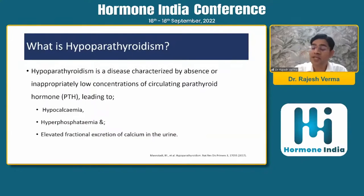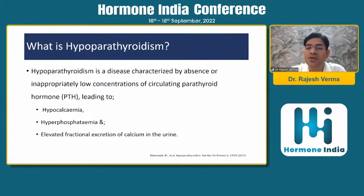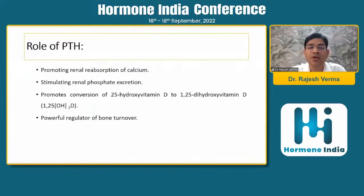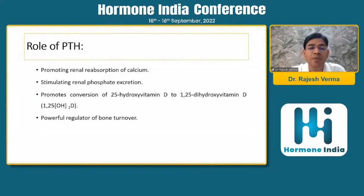To start with, what is hypoparathyroidism? It is a disease characterized by the absence or inappropriately low concentration of circulating PTH hormone, which leads to hypocalcemia, hyperphosphatemia, and elevated fractional excretion of calcium in the urine. The role of PTH is in promotion of renal reabsorption of calcium, stimulating renal phosphate excretion, promoting conversion of 25-OHD to the active form of vitamin D, and it is a powerful regulator of bone turnover.